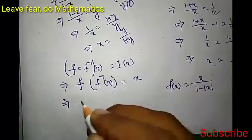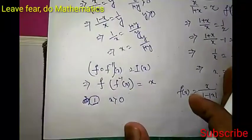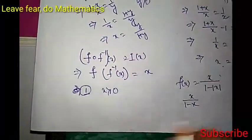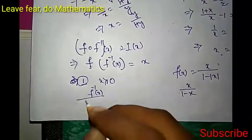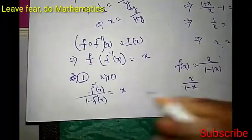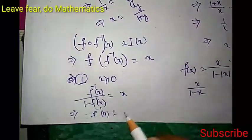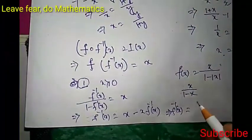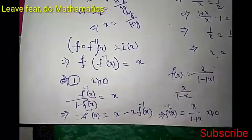Two cases arise. Case 1: when x is greater than or equal to 0, f(x) = x over (1 minus x). So f(f⁻¹(x)) = f⁻¹(x) over (1 minus f⁻¹(x)) = x. Simplifying: f⁻¹(x) = x minus x·f⁻¹(x), which gives f⁻¹(x) = x over (1 plus x), valid when x is greater than or equal to 0.